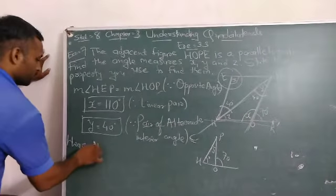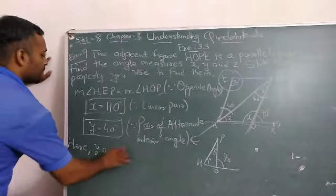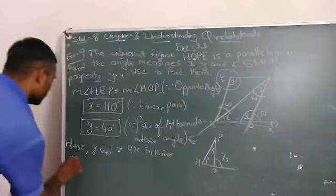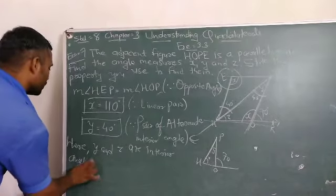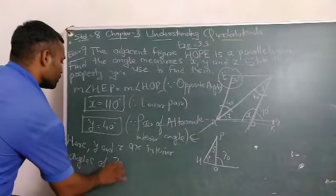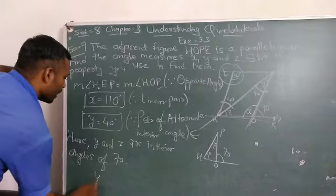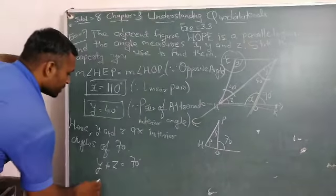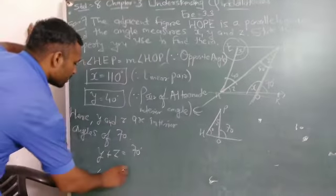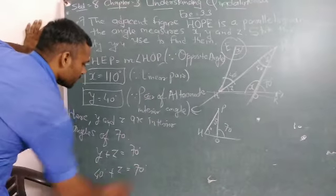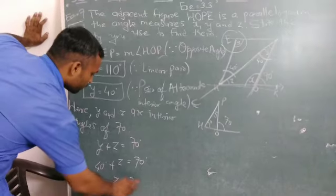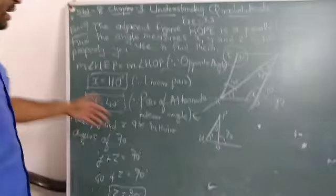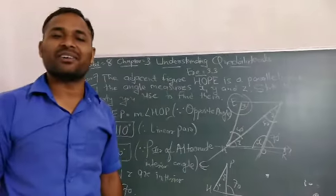So Y plus Z equals 70 degrees. Y is 40 degrees, plus Z equals 70 degrees. Therefore Z equals 30 degrees. So this is your X, Y, and Z angles. Done.